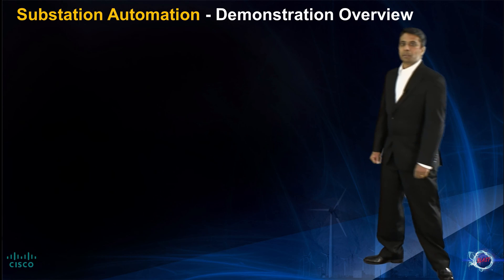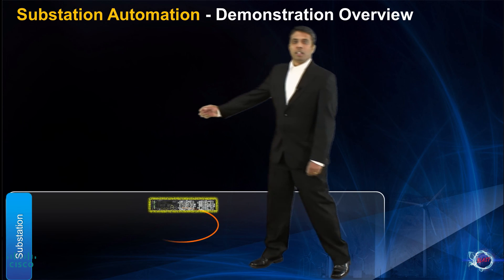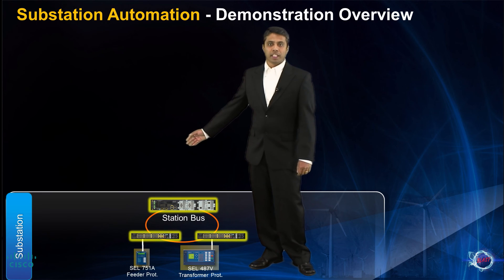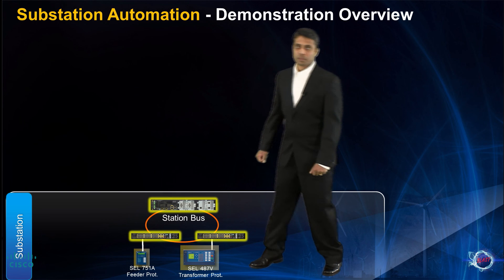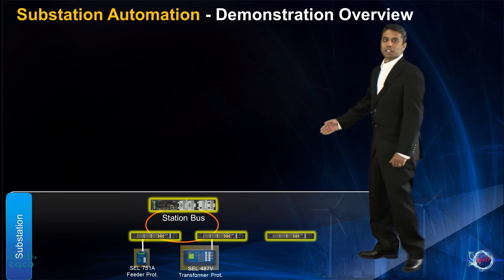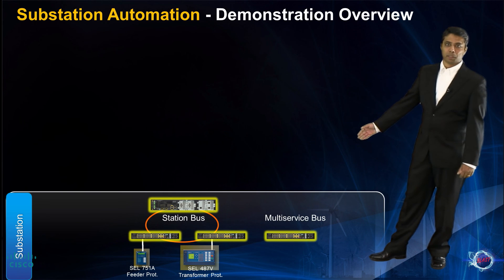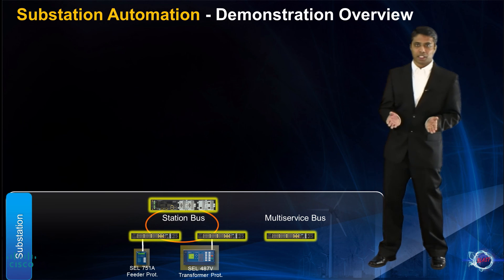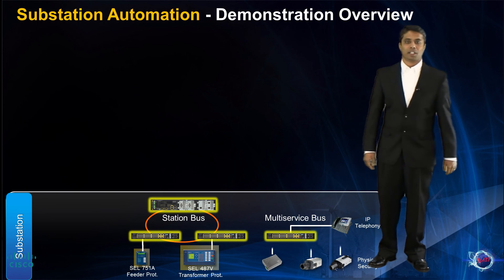Let us start by looking at the substation setup. We have a ring topology in the station bus with protection and control relays along with other communication devices. A single ethernet switch serves as the multi-service bus. The multi-service bus enables services like IP telephony, physical security, and wireless LAN.